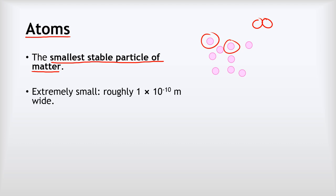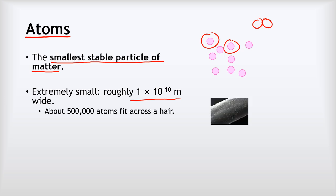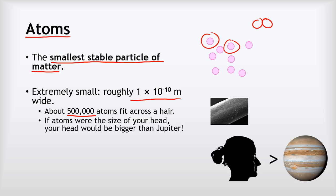Atoms are extraordinarily small. They are roughly 1 × 10⁻¹⁰ metres. That is like dividing a metre into 100 billion individual chunks. That is the size of an atom. Another way to think about that, roughly 500,000 atoms fit across the width of a single human hair. An even madder way to think about it, if atoms were the size of your head, then your head would be bigger than Jupiter. That is the scale of an atom to the size of your head and to the size of Jupiter.